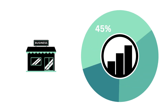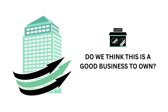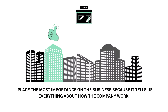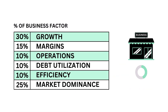Let's first look at the business. The business factor accounts for 45% of the analysis. The business asks the question: is the company a good business to own? I place the most importance on the business because it tells us everything about how the company works. Aside from the final grade, this is where you should put all your focus. In this analysis there are six metrics that make up the business factor, from growth and efficiency to market dominance, each weighted based on importance to the business.